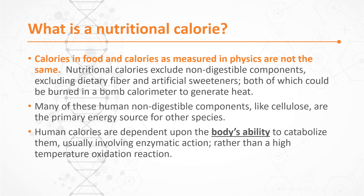Nutritional calories exclude non-digestible components — dietary fibers, artificial sweeteners, things that we can't burn from a biological standpoint but can be burned in a bomb calorimeter to generate heat. Many of these human non-digestible components, like cellulose, which are the primary energy source for ruminants like cows, are things we don't even count. Human calories are dependent upon the body's ability to catabolize them. They involve enzymatic actions and systems that don't require extraordinarily high heat to liberate the calorie. In a bomb calorimeter, you use extreme heat; in the human body, we use enzymes.